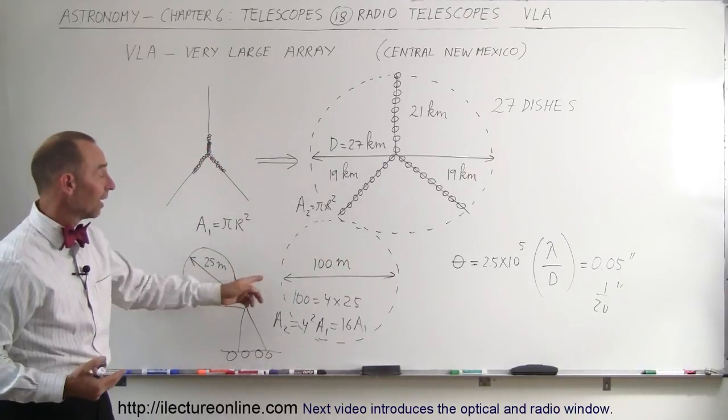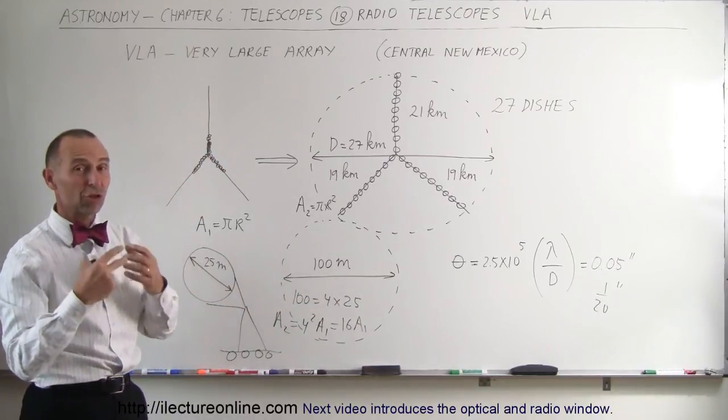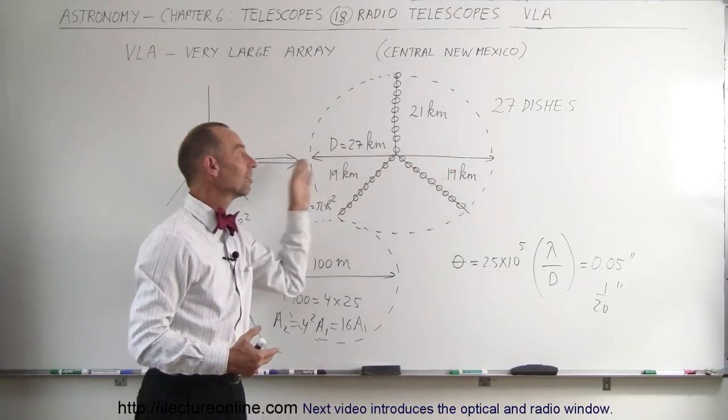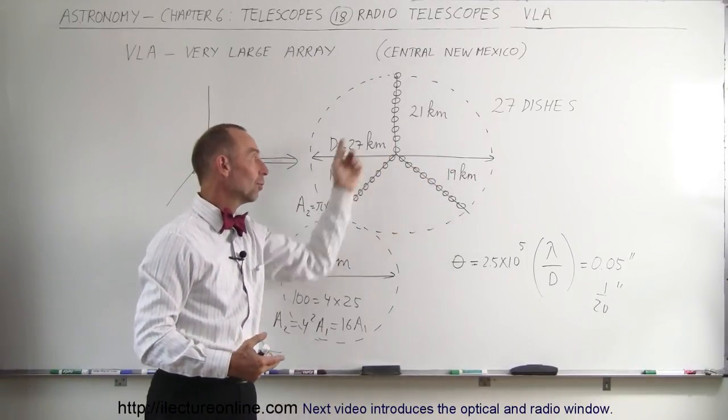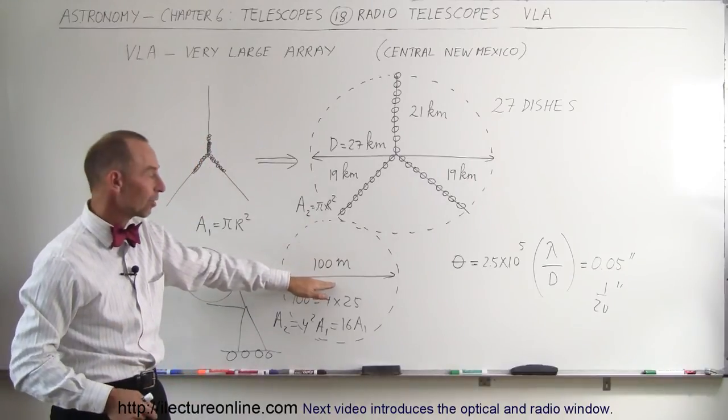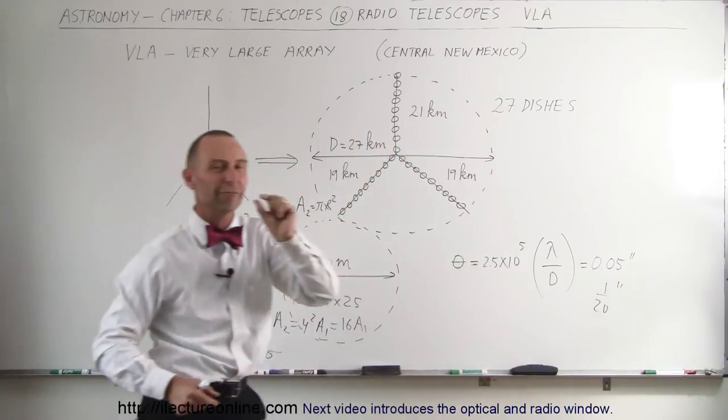In addition to that, the angle of resolution of a 100 meter telescope is much, much larger and not as effective as the angle of resolution of a 27 diameter one. So this array can collect almost twice as much energy as one single giant radio telescope. And in addition to that, it has a tremendous resolution angle, very, very tiny.